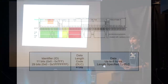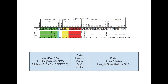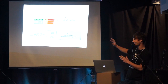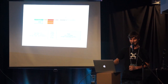So what is CAN actually? From a software perspective, there are three things: an identifier — what is the message and what does it mean; a data length code — how long is the message; and a payload of data. The identifier is either 11 bits or 29 bits, almost always 11. The data length code is a 4-bit number from 0 to 8, and then there are 0 to 8 bytes of data. That's it. Compared to Ethernet, this is just trivial.